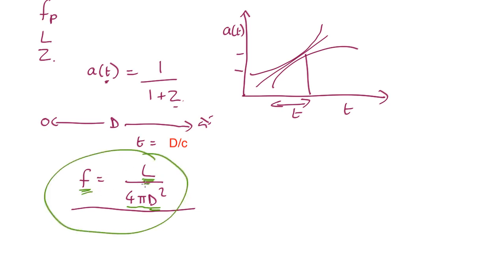So we know f, we know L. If we multiply both sides by D², we get D² equals L over 4πf. Take the square root, and we get D equals root L over 4πf.